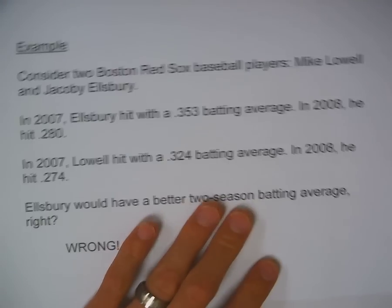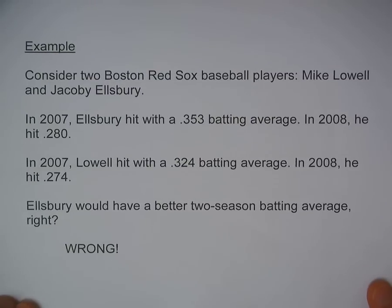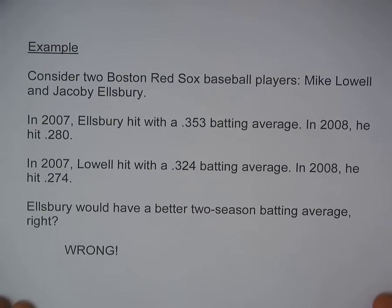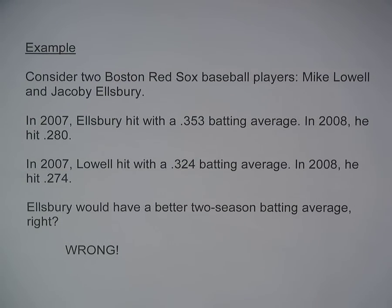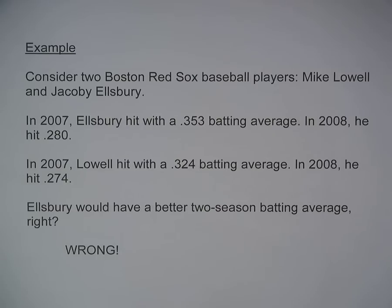Let's take a look at an example. It involves baseball. Consider two Boston Red Sox baseball players, Mike Lowell and Jacoby Ellsbury. In 2007, Ellsbury hit .353, or hit with a .353 batting average.